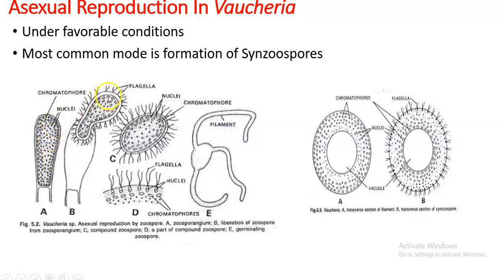At the time of release of the synzoospore, the nuclei come to the periphery while the chromatophores move to the inside area. In cross-section, you can see the nuclei at the surface or periphery and the chromatophores towards the central area. In the vegetative thallus this is the opposite — nuclei are towards the vacuole and chromatophores towards the periphery.